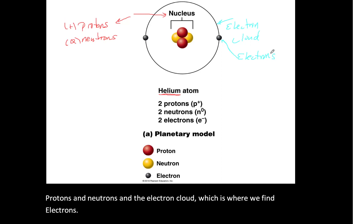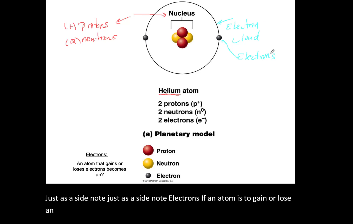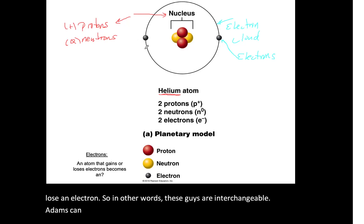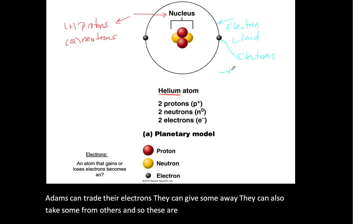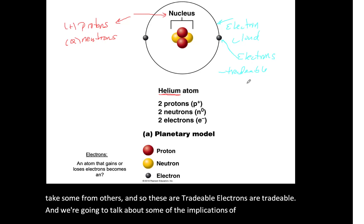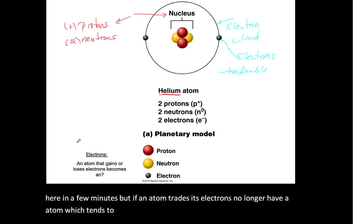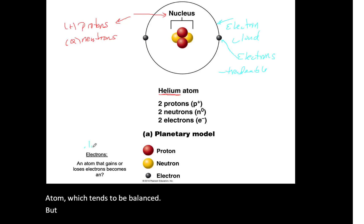Just as a side note: electrons are interchangeable. Atoms can trade their electrons — they can give some away and take some from others. Electrons are tradable. If an atom trades its electrons, you no longer have an atom that tends to be balanced; instead you create an ion. An ion is any atom that has gained or lost electrons.